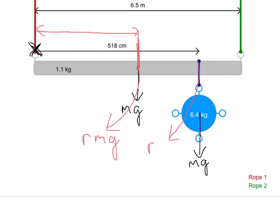So you get the torque from the rod, you get the torque from the ball, and you add those two together. That will be your total clockwise torque.